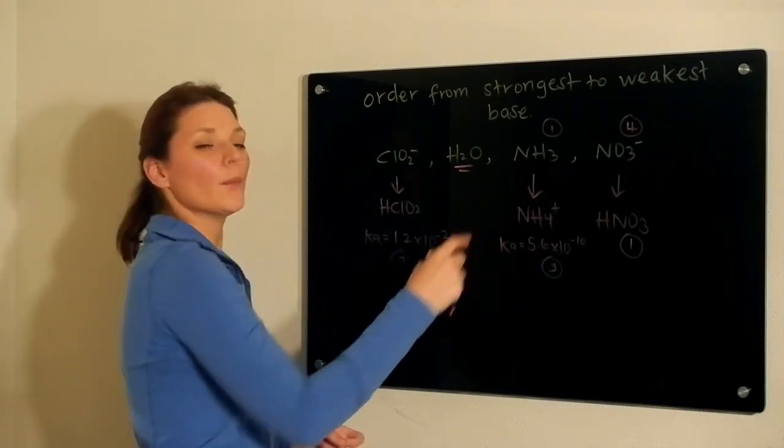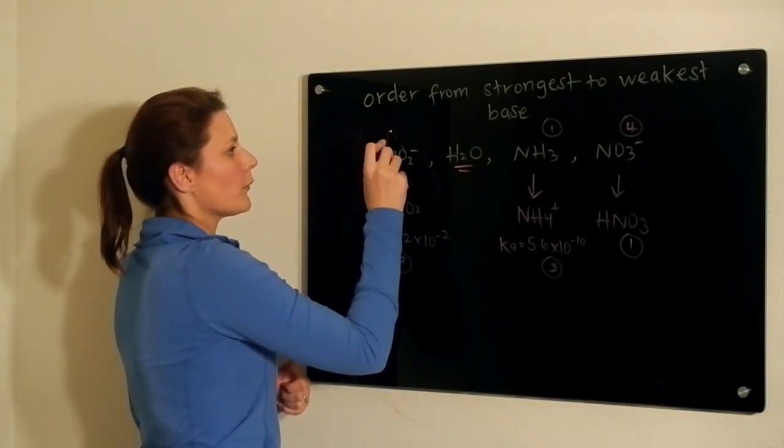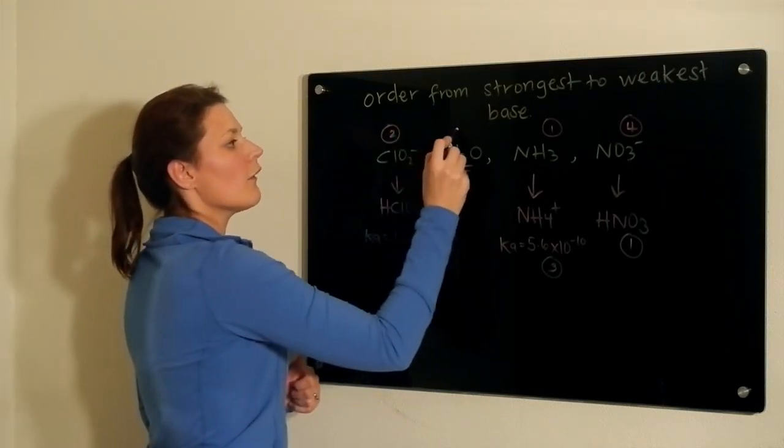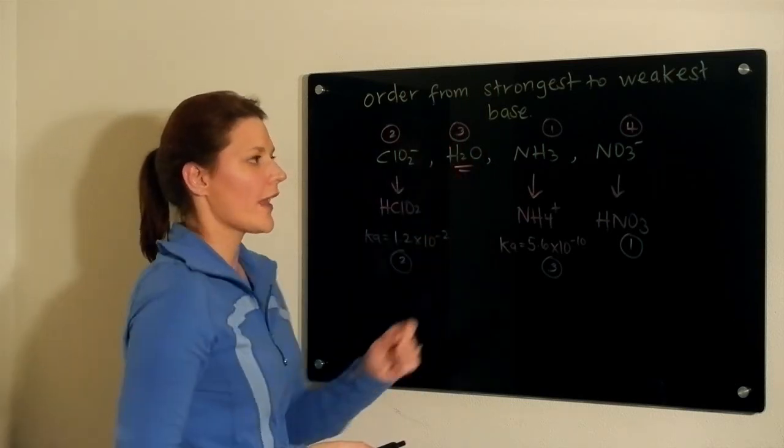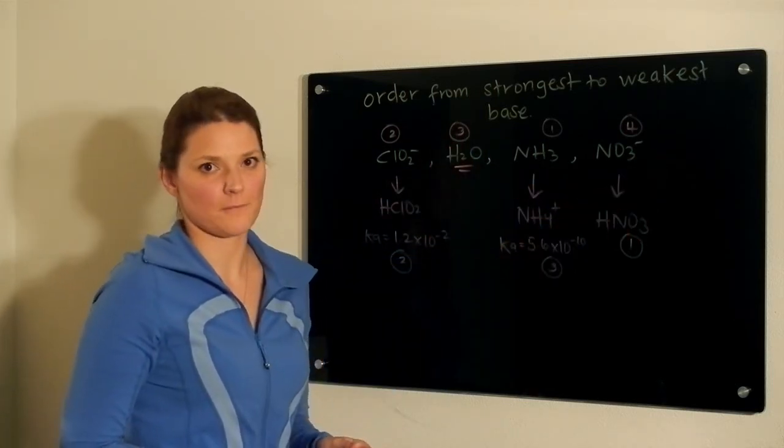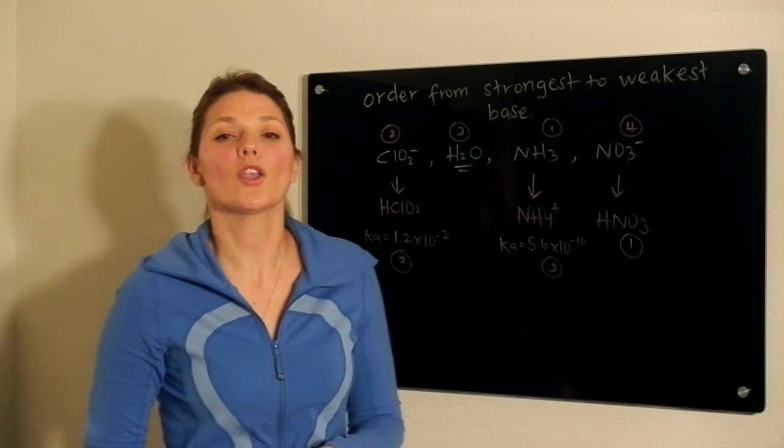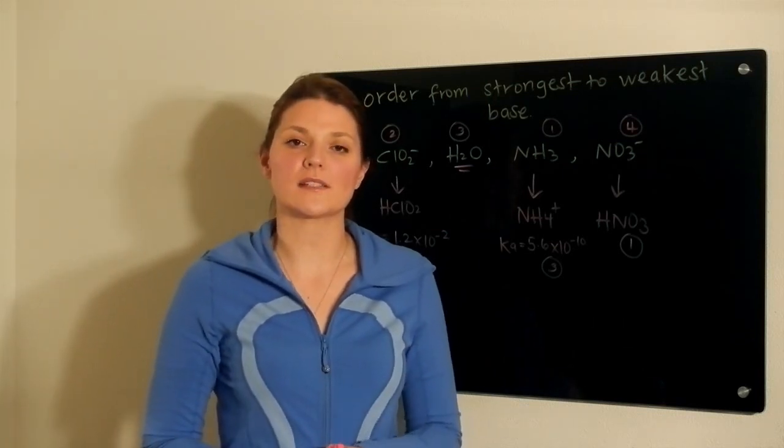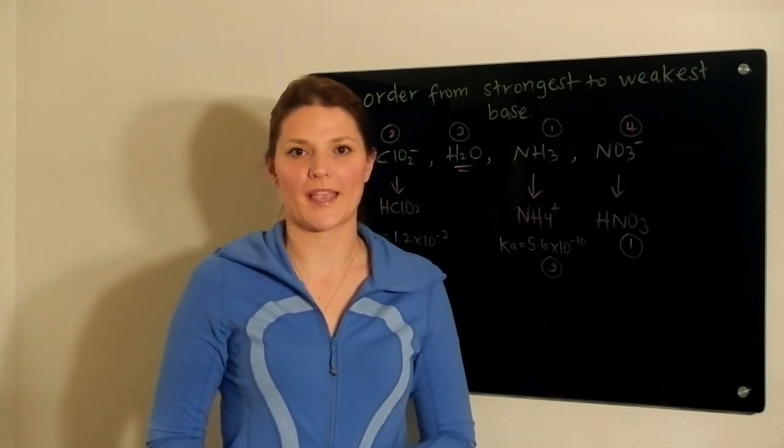So ammonia would be the best base. Chlorite would be the next best, followed by water, which would then be followed by the nitrate. And that is how you would handle ordering your substances from weakest to strongest in terms of base strength.